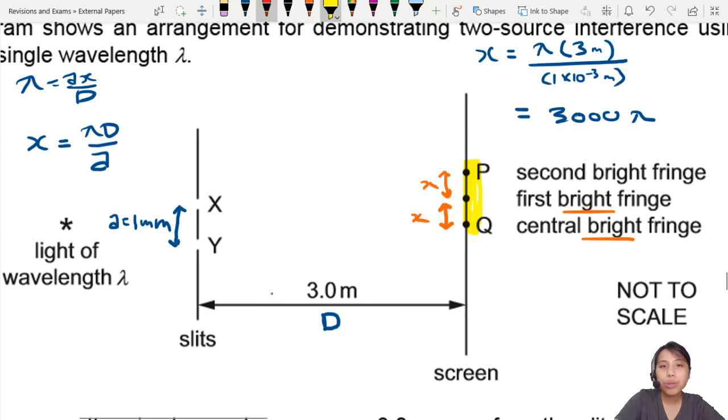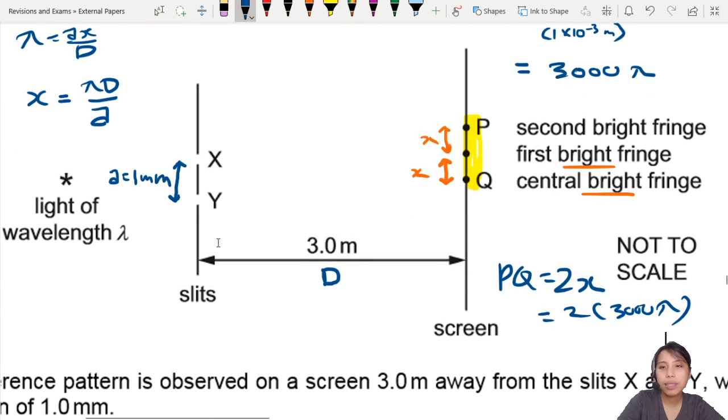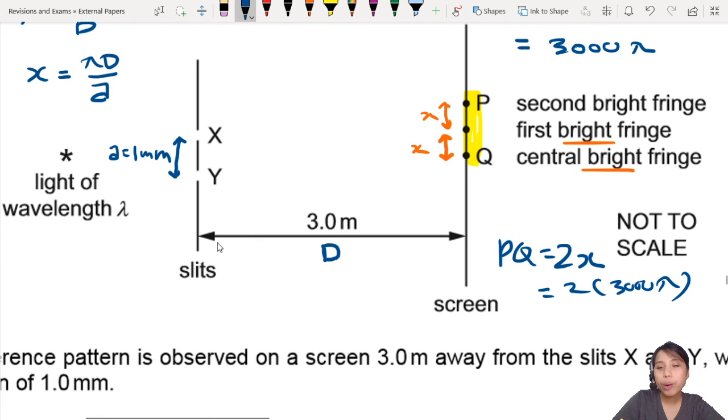But we want PQ distance, this whole thing here. So you need to remember that PQ is 2 times the fringe separation, so 2 of 3000 lambda. Oh man, my head is blocking this again. So 2 times 3000 lambda will be 6000 lambda. So that should be the answer, distance between PQ. Let's check.